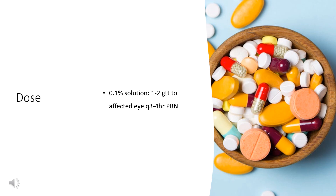As an ocular vasoconstrictor and decongestant for temporary relief of ocular redness caused by irritation, and relief of burning or irritation caused by dry eyes: 0.1% solution, 1–2 drops to the affected eye every 3–4 hours as needed; 0.012% or 0.025% solution, 1–2 drops to the affected eyes not to exceed every 6 hours. Therapy should not exceed 72 hours of use.